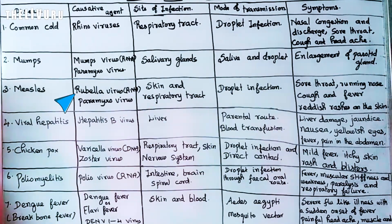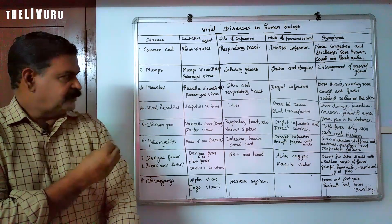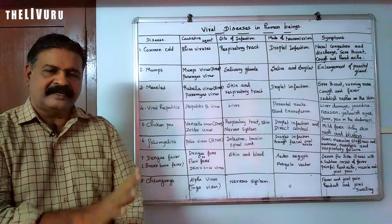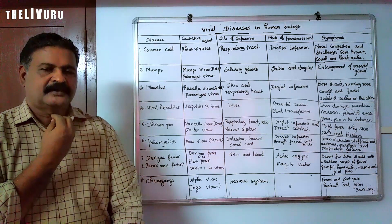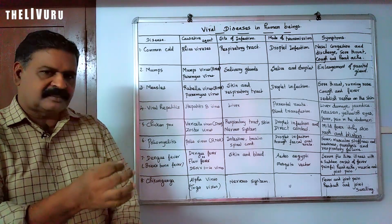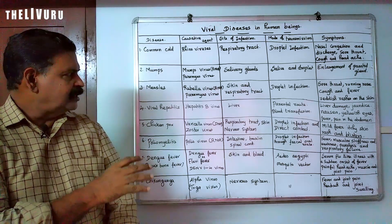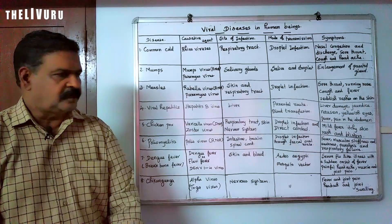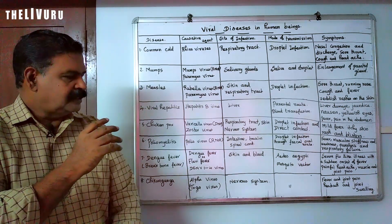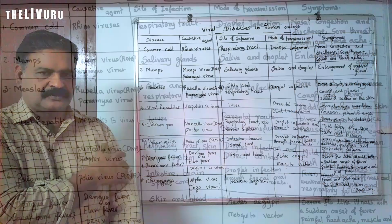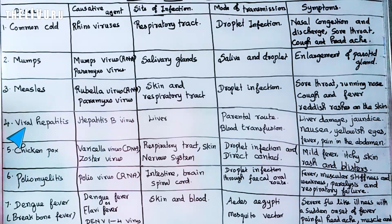The next disease is measles, also caused by a paramyxovirus — an RNA virus. It affects the respiratory system. Common symptoms include running nose, sore throat, fever, and a reddish rash. Transmission is by droplet infection.